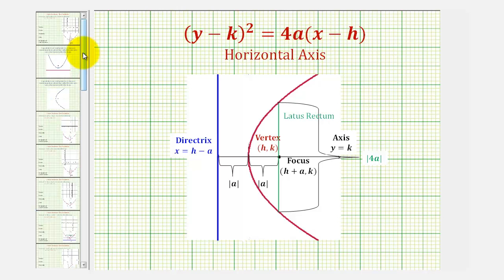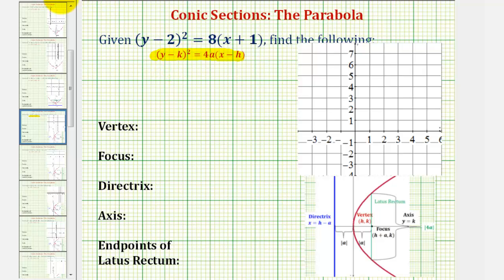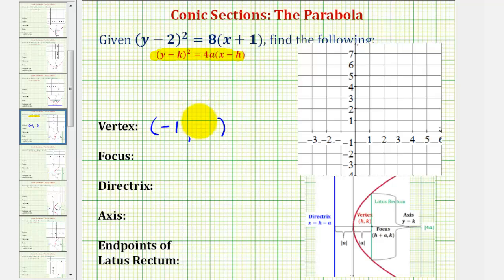Going back to our example, the vertex of the parabola will have coordinates h, k. Since we have the quantity x plus one, the x-coordinate is negative one. And because we have the quantity y minus two, the y-coordinate is positive two.